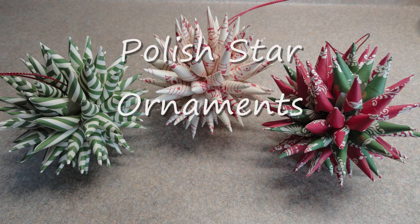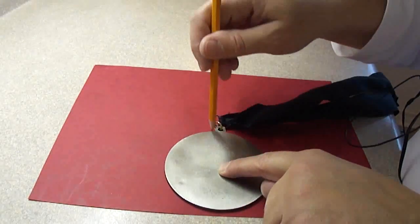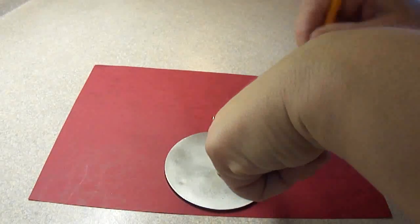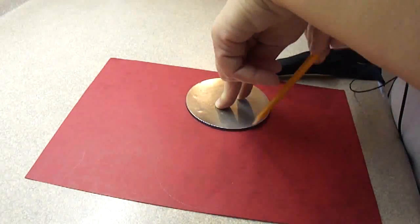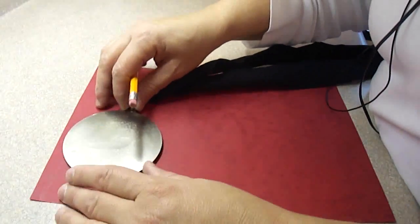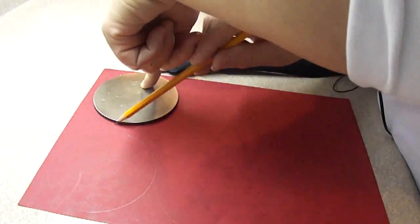Hi there, today we're making Polish star ornaments. First thing you're going to do is you need about 10 to 14 three-and-a-half or four inch circles. I'm using a lid that my son wanted because it's three and a half inches and it's the perfect size.